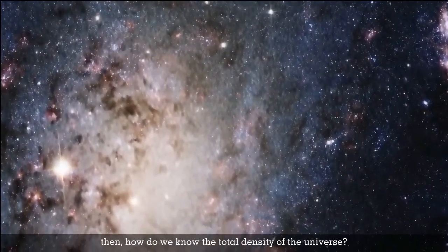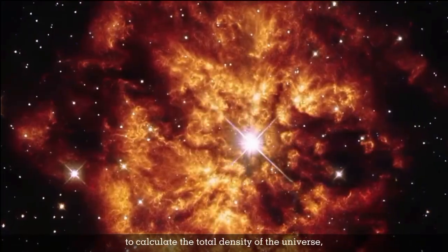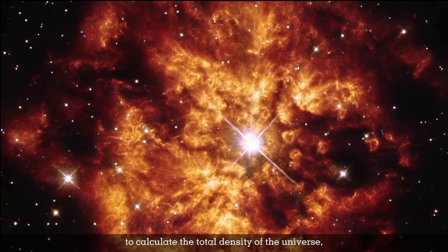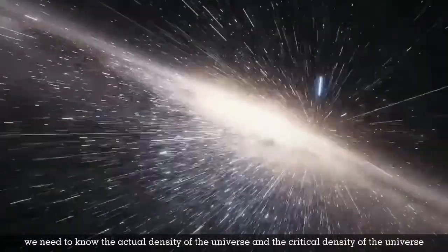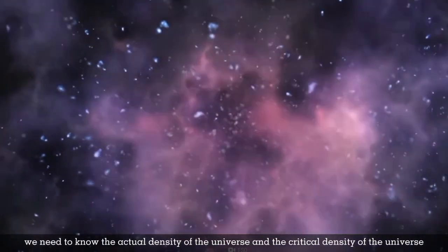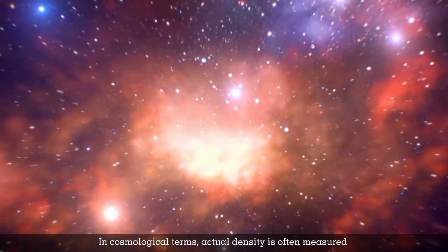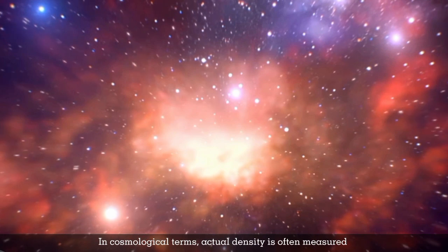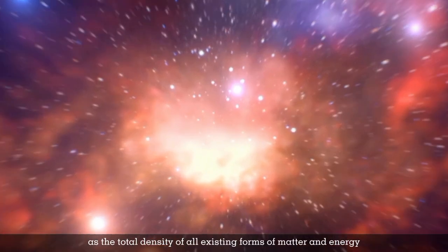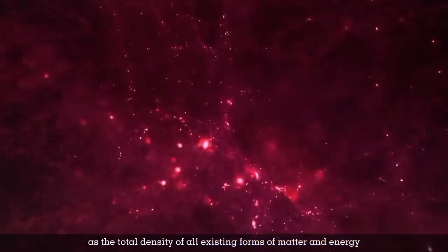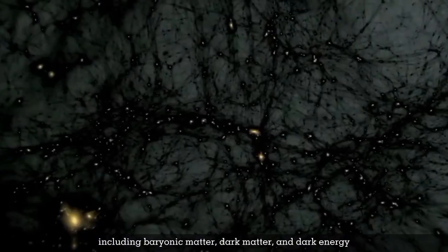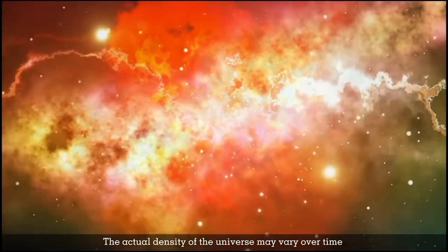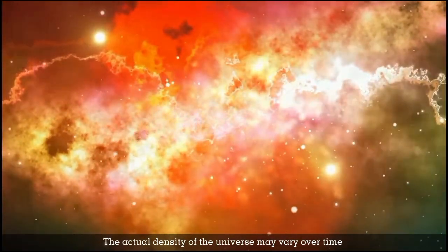Then, how do we know the total density of the universe? To calculate the total density of the universe, we need to know the actual density of the universe and the critical density of the universe. In cosmological terms, actual density is often measured as the total density of all existing forms of matter and energy, including baryonic matter, dark matter, and dark energy. The actual density of the universe may vary over time.